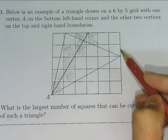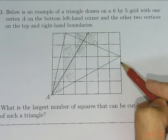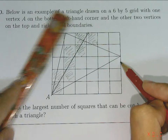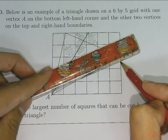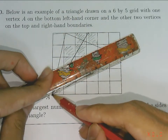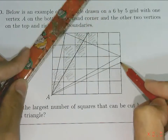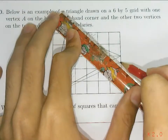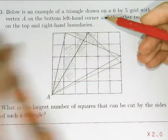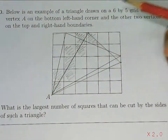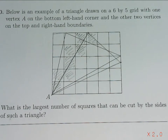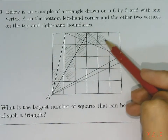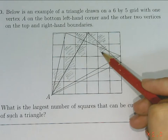Similarly, we apply that concept to this side. If you place this vertex in the center of the 5-unit grid and draw this line here, then join up the triangle, this will be the optimum triangle which cuts the most number of squares from its sides.